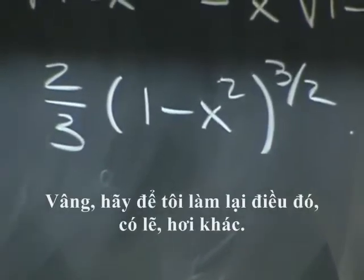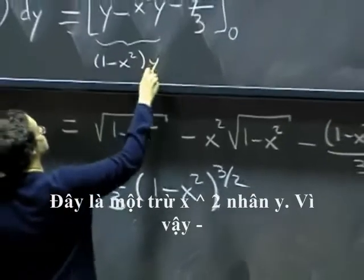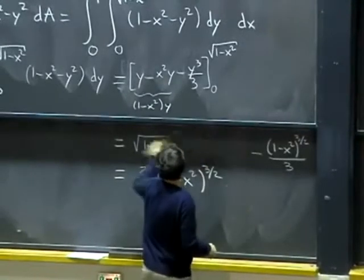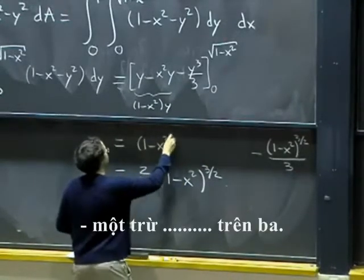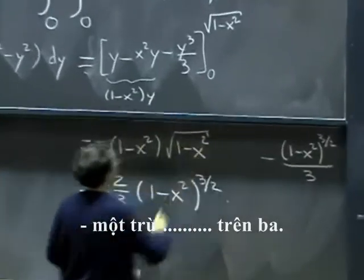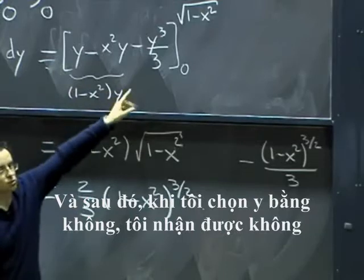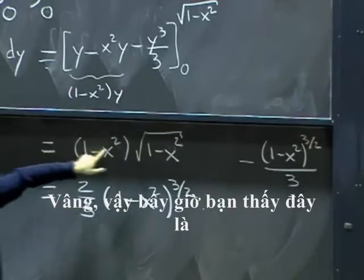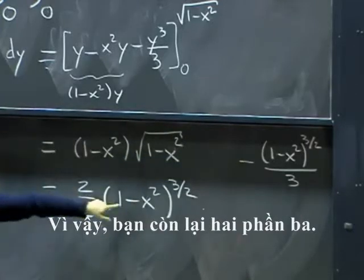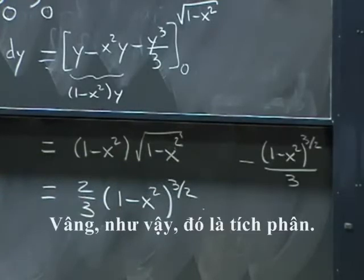OK, let me redo that maybe slightly differently. This was one minus x squared times y. So, one minus x squared times y becomes square root of one minus x squared minus y cubed over three. And then, when I take y equals zero, I get zero. So, I don't subtract anything. OK, so now you see this is one minus x squared to the three halves minus a third of it. So, you're left with two-thirds. OK? So, that's the inner integral.